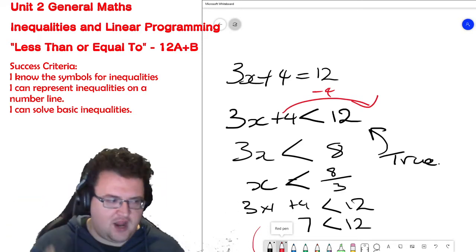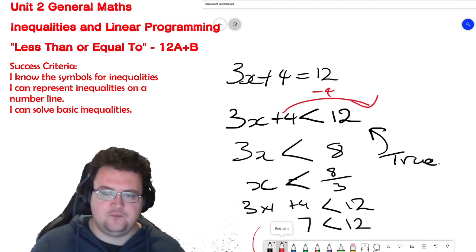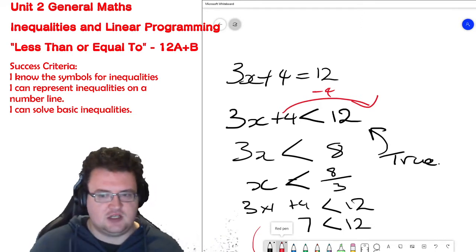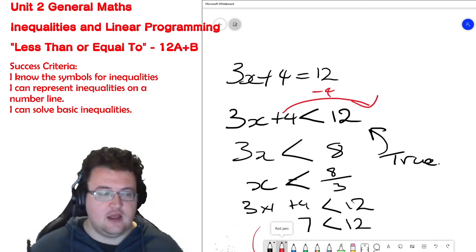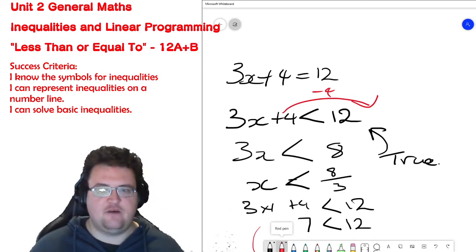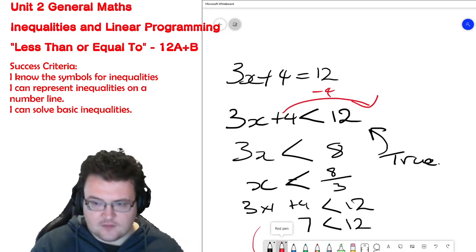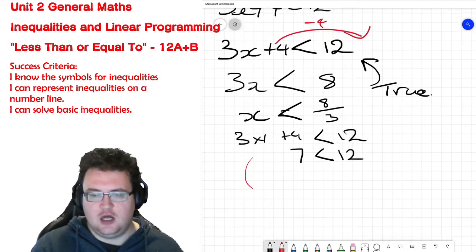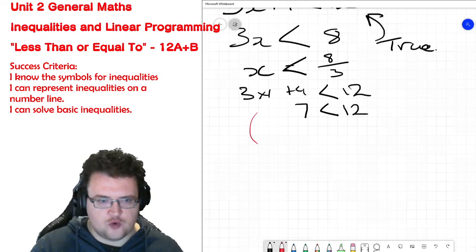But if I put x equals 3 into there, 3 times 3 is 9 plus 4 is 13. 13 is not less than 12. That means the inequality is now false. So what we're looking for are true statements.